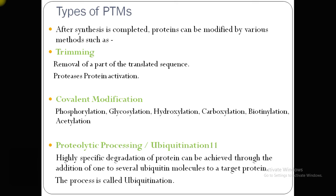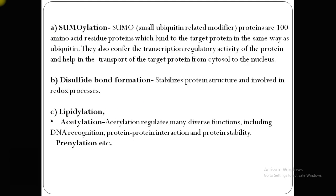In the ubiquitination process, ubiquitin protein is covalently linked with the lysine residues of the protein molecule, and then this tagged protein is targeted. SUMOylation involves a small ubiquitin-related modifier protein of around 100 amino acid residues which binds to a target protein in the same way as ubiquitin.